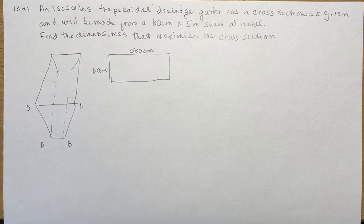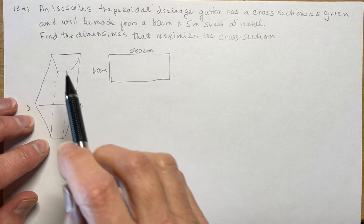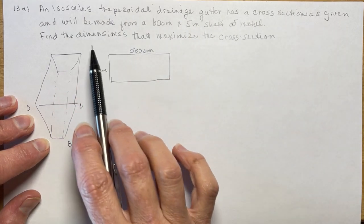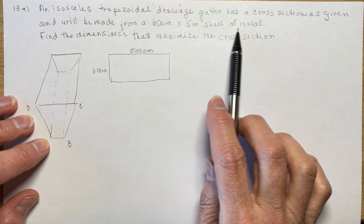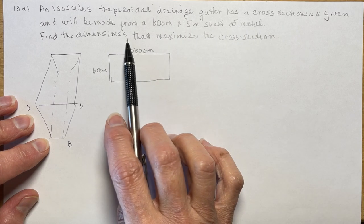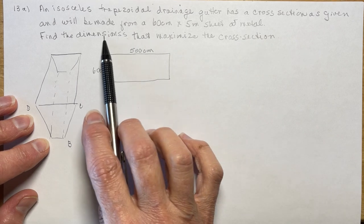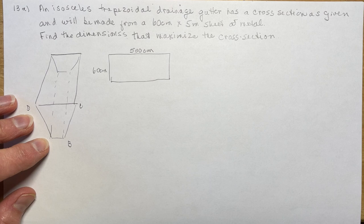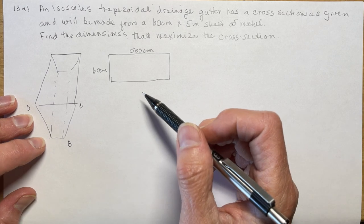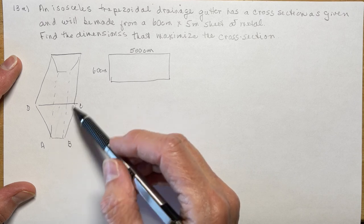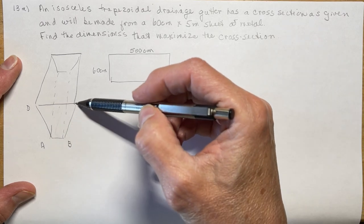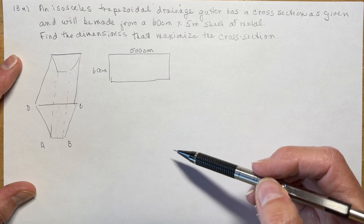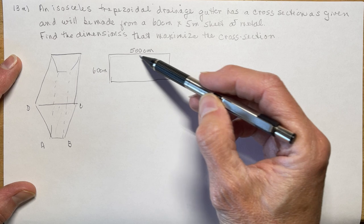It says an isosceles trapezoidal drainage gutter has a cross-section as given and will be made from a 60 by 5 meter sheet of metal. Find the dimensions that maximize the cross-section. So we're trying to find how to maximize this area because this length isn't going to change.